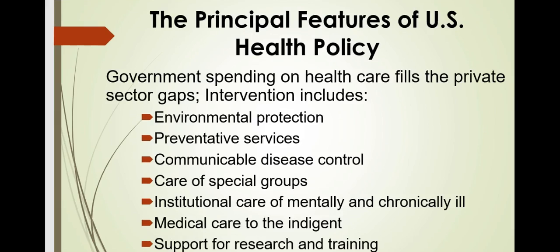Government spending on health care fills in where the private sector falls short. Government interventions include environmental protection, preventative services, communicable disease control, care of special groups, institutional care of the mentally and chronically ill, medical care to the indigent, and support for research and training.